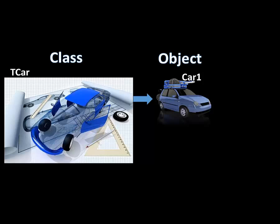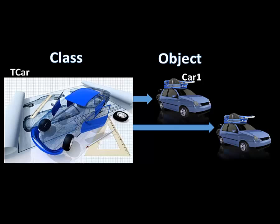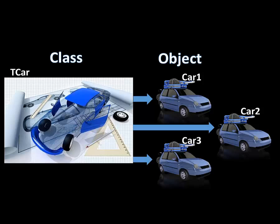If I create a second instance, it will look similar to the first instance, because they are constructed from the same blueprint. The name of the second instance of the TCar class will be car2. I can create many more instances from the same class, like a car3. All my instances are created from the same plan, so they will all look the same.